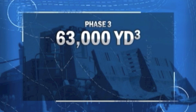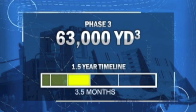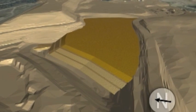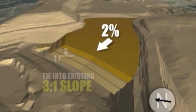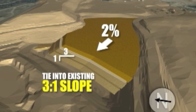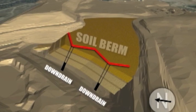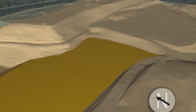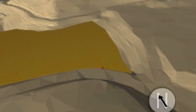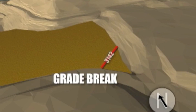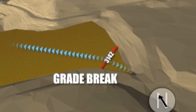Phase 3 represents approximately 63,000 cubic yards of filling. We anticipate this will take approximately 3.5 months to complete. This sheet shows placing another 10-foot lift in the same area. The same guidelines apply: 2% slope on top, tying into a 3-to-1 on the west edge. You will again be extending the down drains and constructing a soil berm. However, this sheet shows creation of a grade break near the east end at an elevation of 3,142. Everything west of this point drains to the west, and that small area east of the grade break drains back to the east.